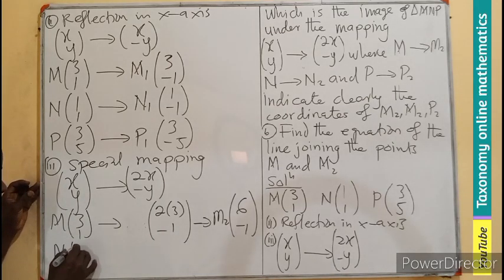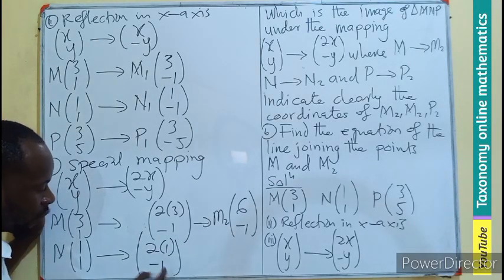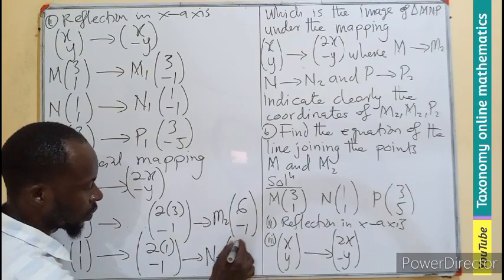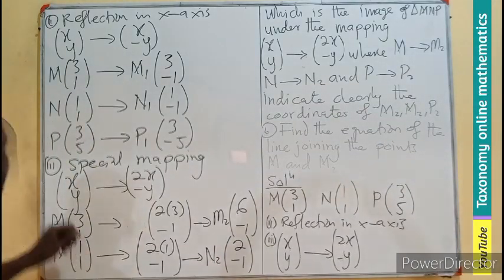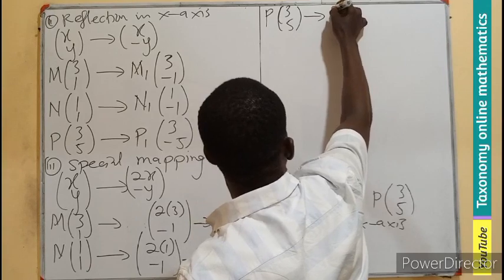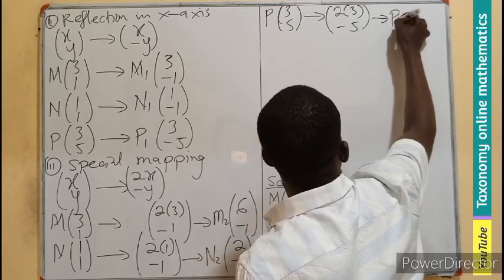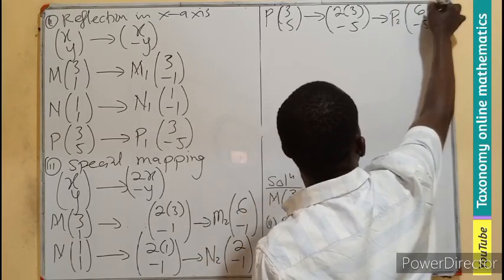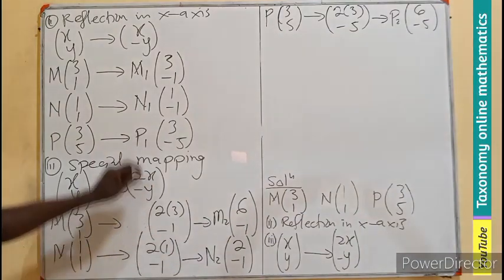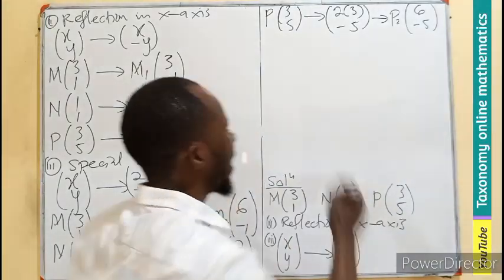So, my N will also be (1,1), which will map to (2×1, negative 1). And that will map to N2 to be (2, negative 1). So, the third point, which will be P(3,5), will move to 2 times the X, negative 5, meaning the P2 will be (6, negative 5). So, now we are able to have the first triangle, the second triangle will be using this point. Then, the third triangle will be using this point. Let's get to the B part.